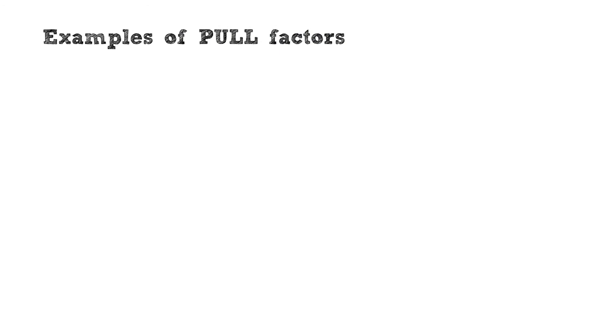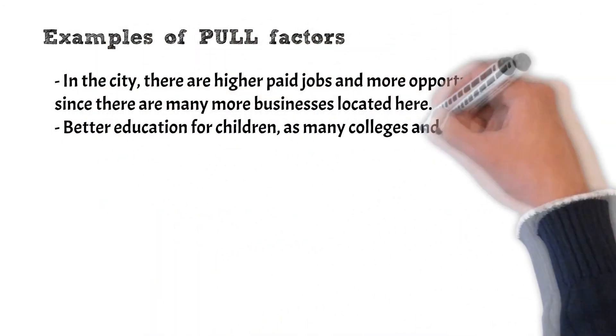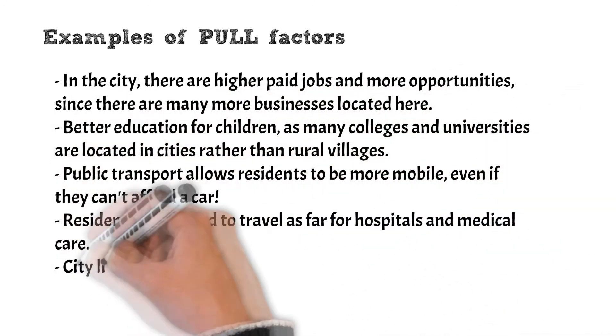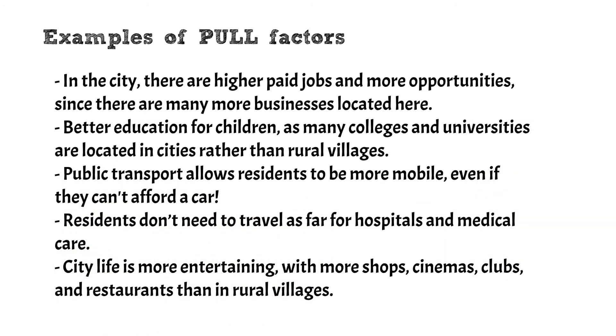Examples of pull factors: in the city there are higher paid jobs and more opportunities since there are many more businesses located here. Better education for children as many colleges and universities are located in cities rather than rural villages. Public transport allows residents to be more mobile even if they can't afford a car. Residents don't need to travel as far for hospitals and medical care. City life is more entertaining with more shops, cinemas, clubs, and restaurants than in rural villages.